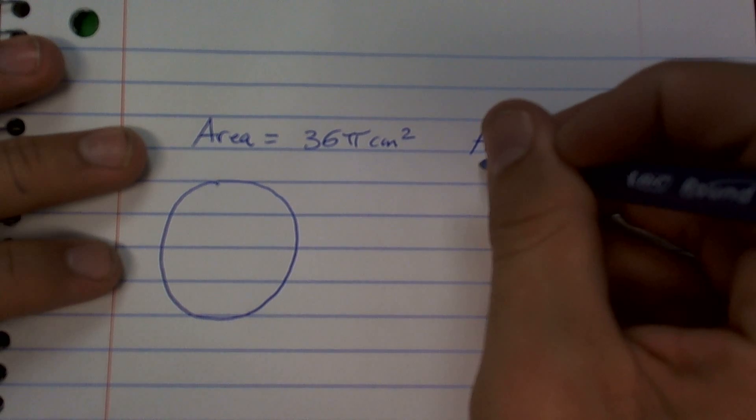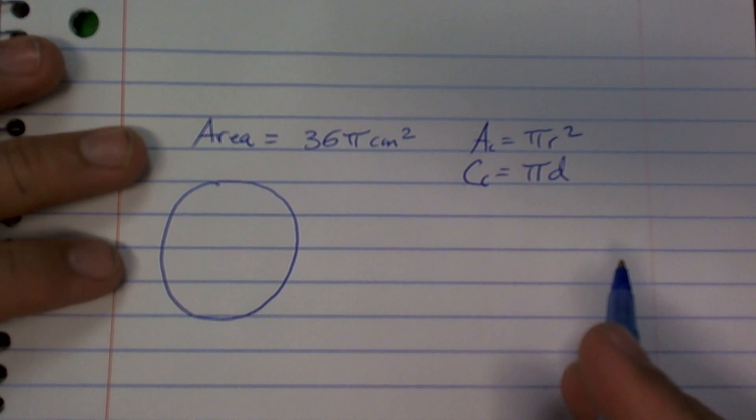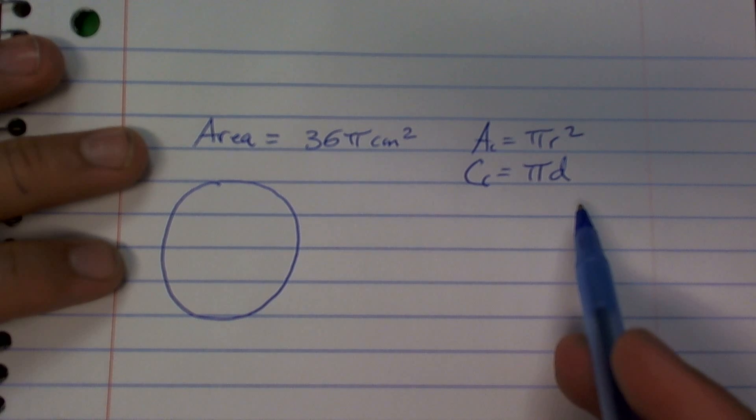Circumferences. Go ahead. Pi times 2 diameter. Yeah, pi times diameter or pi times 2 r. So those are the only two formulas we've used.